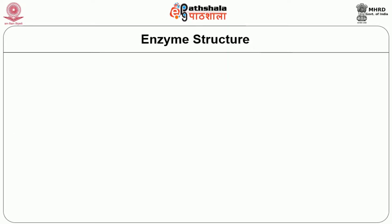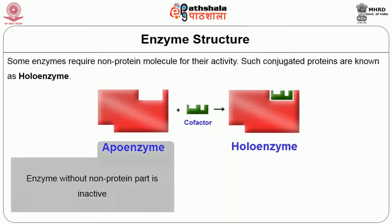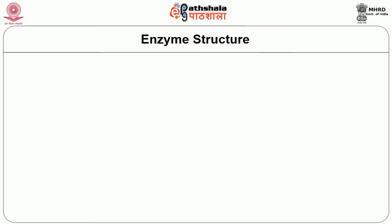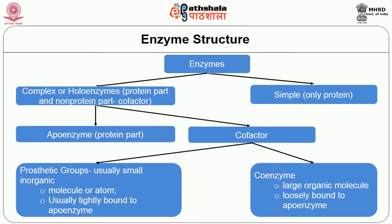Before we discuss enzyme classification, let us understand enzyme structure in detail. Some enzymes require non-protein molecules for their activity; such conjugated proteins are called holoenzymes. Based on structure, enzymes can be classified as simple enzymes, where only the protein part is present, or complex enzymes, also called holoenzymes, where there is a protein part as well as a non-protein part called a cofactor. The holoenzyme consists of the apoenzyme (protein part) plus a cofactor. The enzyme without the non-protein part is inactive and is called an apoenzyme.